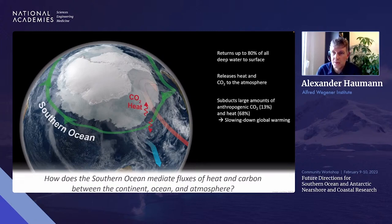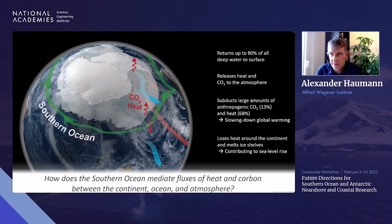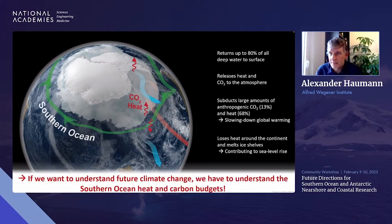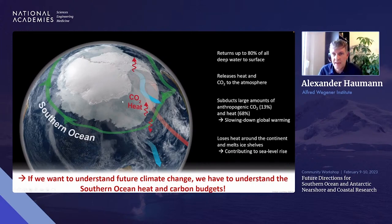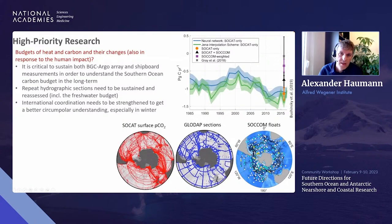Put a number on this with current carbon values, and we are talking about many trillions of dollars. Through this process the Southern Ocean substantially slows down global warming. The other important process is that it loses heat towards the continent, interacting with melting ice around Antarctica and contributing to sea level rise. However, if we look at this in detail, we have huge uncertainties in these fluxes — when building budgets we're sometimes debating the sign of the flux in certain regions, which is a huge issue for understanding the future of global climate change.